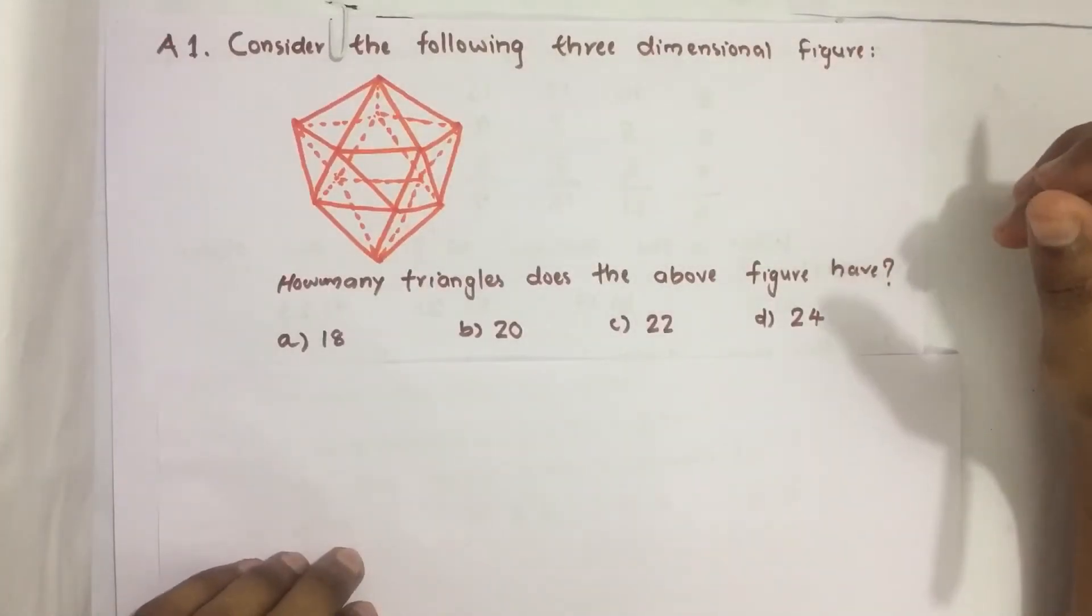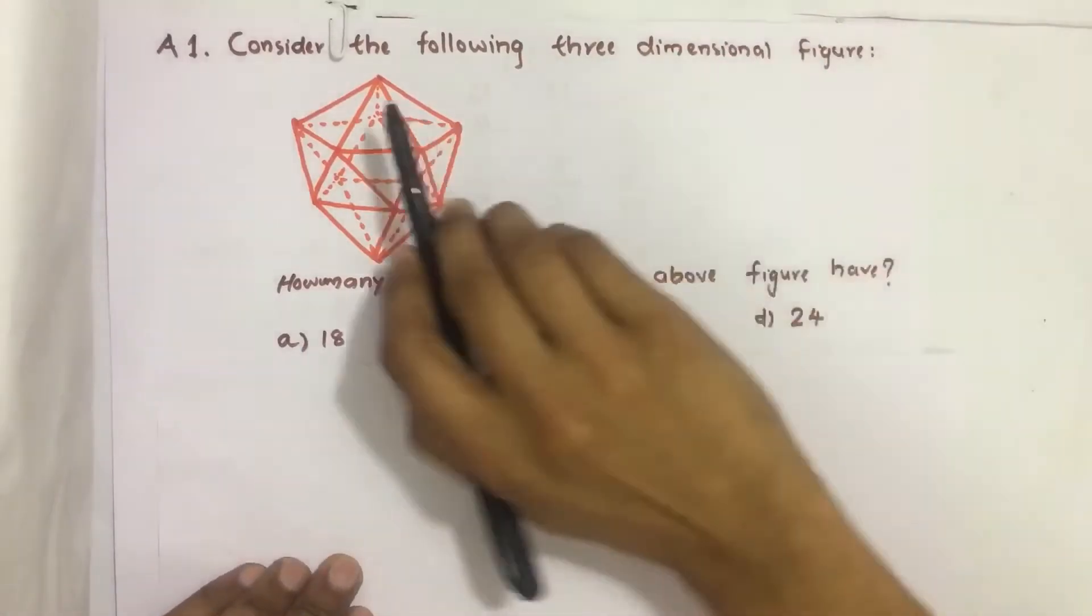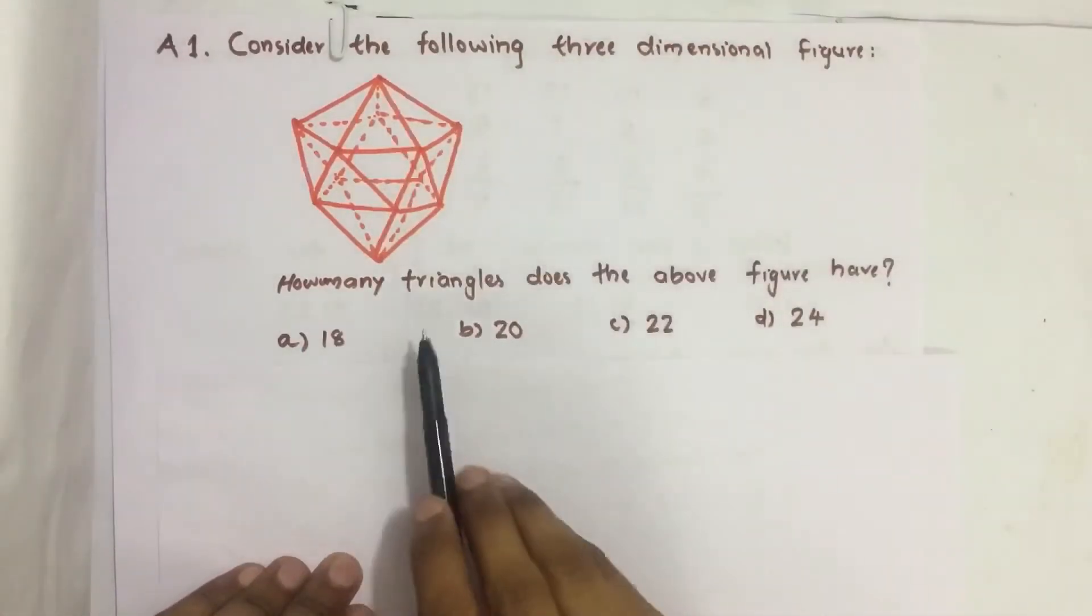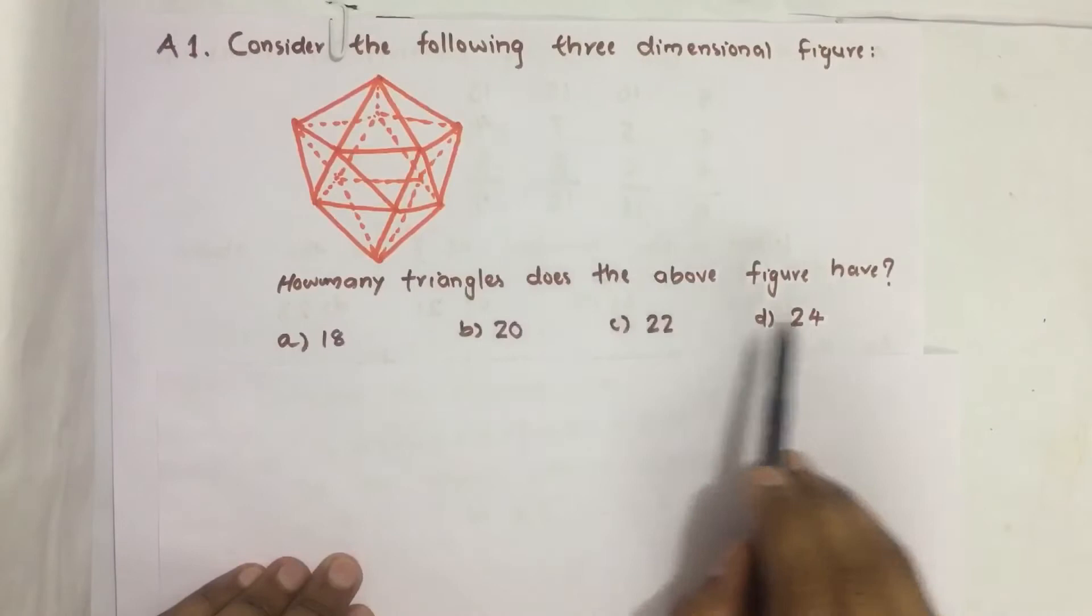Hello everyone. Here I am going to solve 2018 CSAT question number 1 from Question Paper Series A. Consider the following three-dimensional figure. How many triangles does the above figure have?